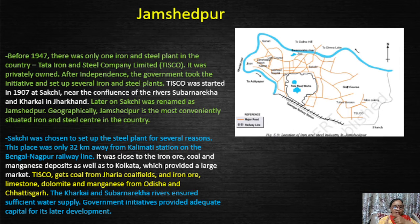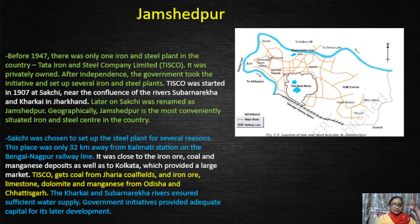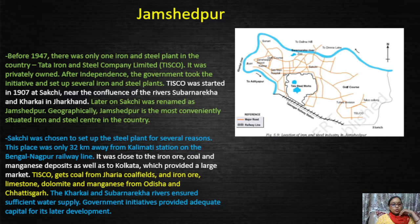All the factors are present here: iron ore, coal, magnesium, market, and transport facilities. We have all the facilities in this area, and this is why TISCO was established here. TISCO gets coal from the coal fields, along with iron ore, limestone, dolomite, and magnesium from Odisha.